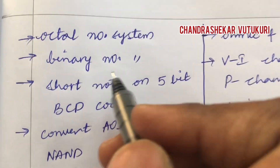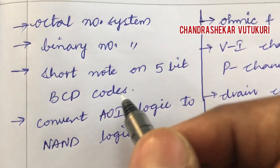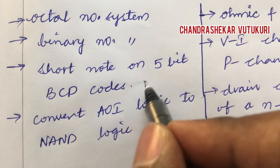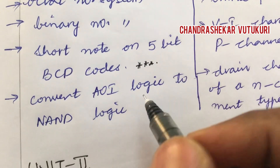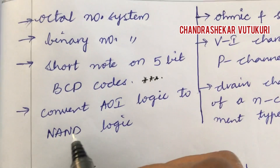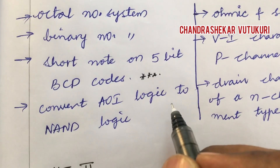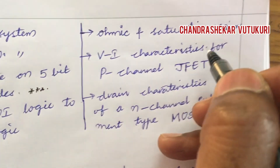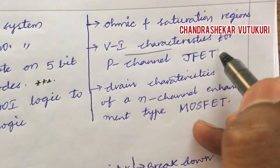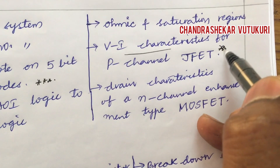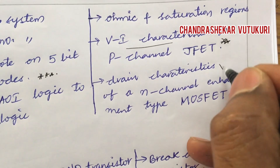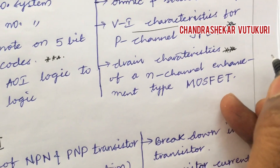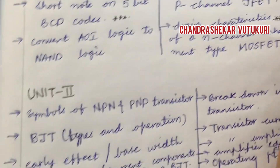The octal number system, binary number system, short note on 5-bit BCD codes — these are lengthy topics to work out. Convert AOI logic to NAND logic. Ohmic and saturation regions, V-I characteristics are the top-most questions, and drain characteristics have also been asked in long questions.